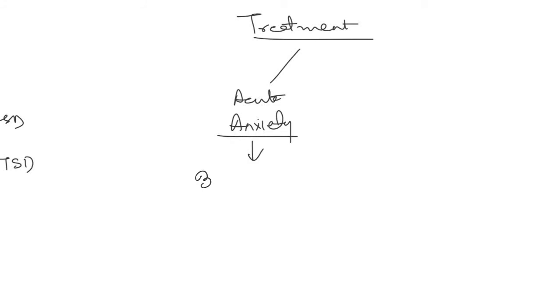Now talking about the treatment, in case of all the anxiety disorders, the treatment is more or less the same. In case of acute anxiety or acute attack of anxiety, we use the benzodiazepines. And in case of chronic anxiety, like in case of anxiety disorder where the anxiety is there for a long period of time, we use SSRIs, selective serotonin reuptake inhibitors.